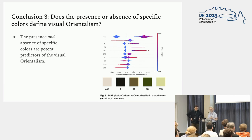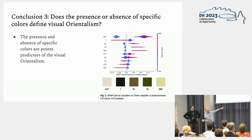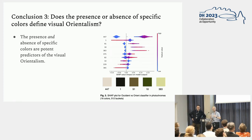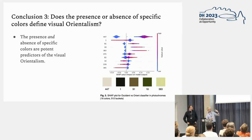Finally, the question: does the presence or absence of specific colors define visual Orientalism? We find that certain colors are very potent predictors. One color we found quite interesting was bucket 18 — a light green color. It is actually a potent predictor of the Orient, whereas we expected it to be much more closely associated with the Occident given many pictures of forest areas. This was an unexpected result. Both the presence and the absence of this color are very separated, making them very potent predictors.